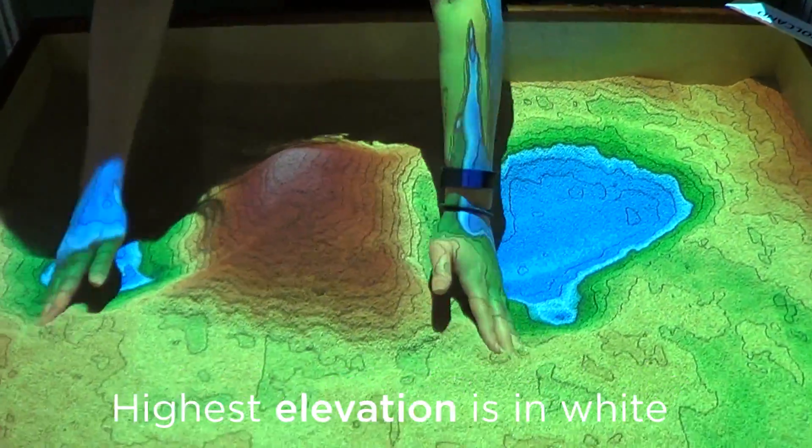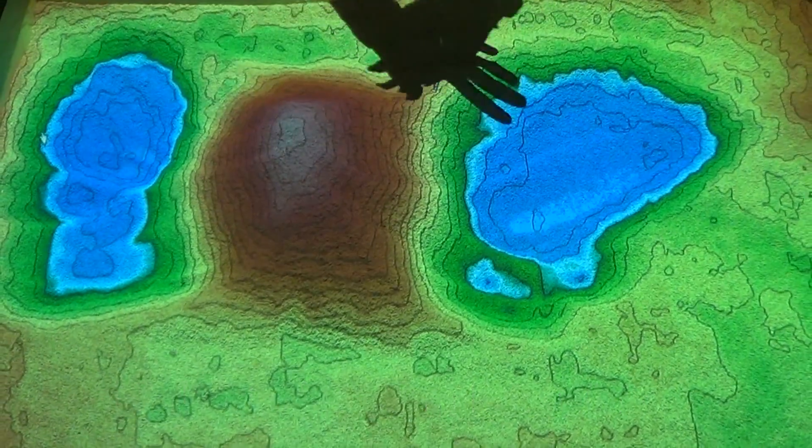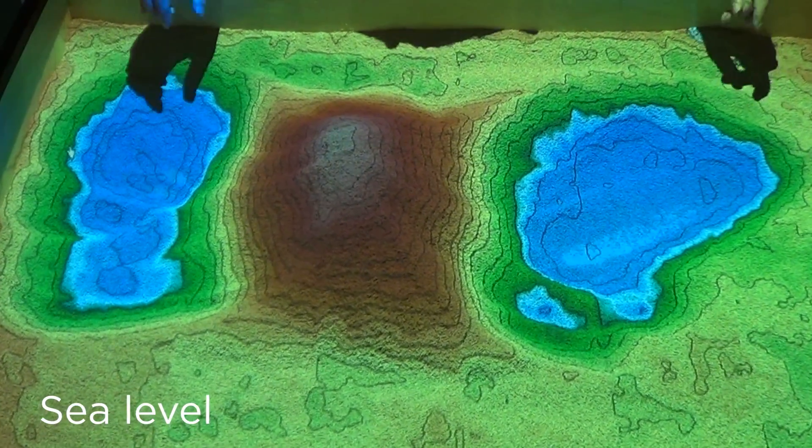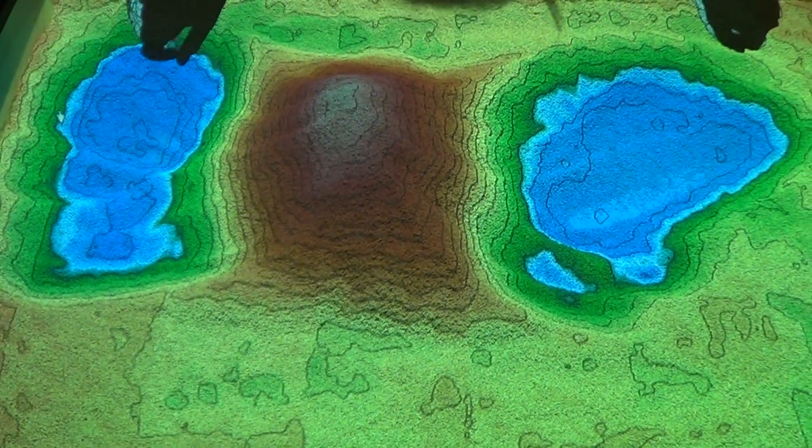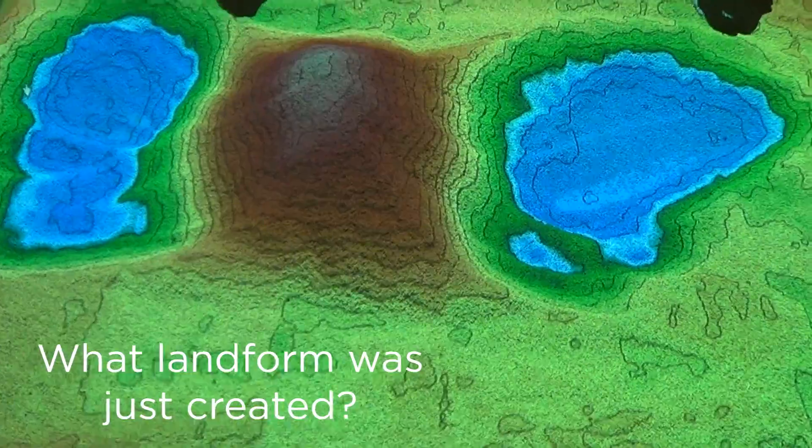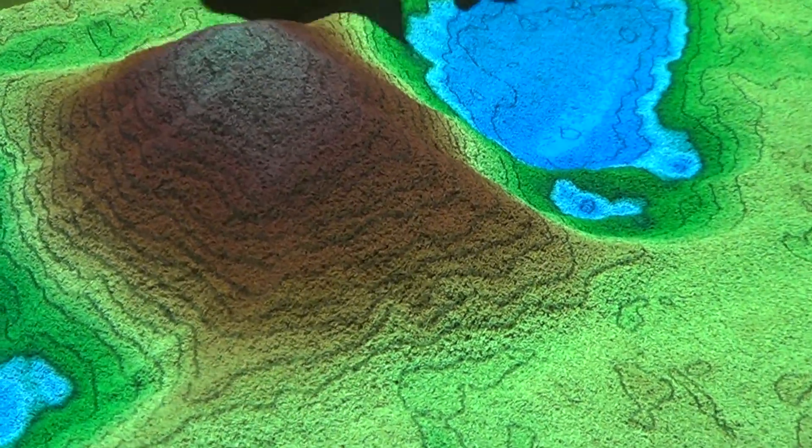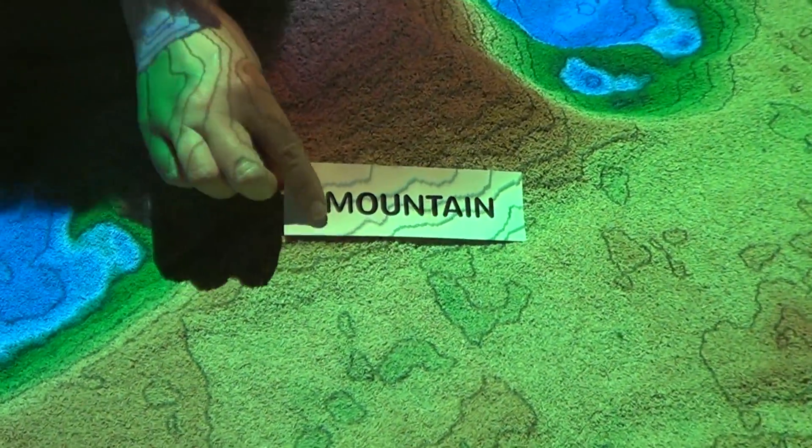Now right now the highest elevation is in white, and the lowest elevation is blue and that's actually sea level, zero feet above the sea water. That would be like being out at the beach. So what landform do you think I just created right here in the middle? If you were thinking mountain, you would be correct.